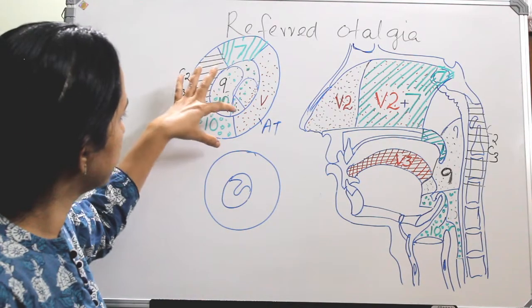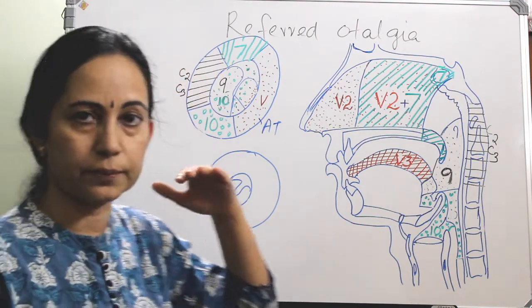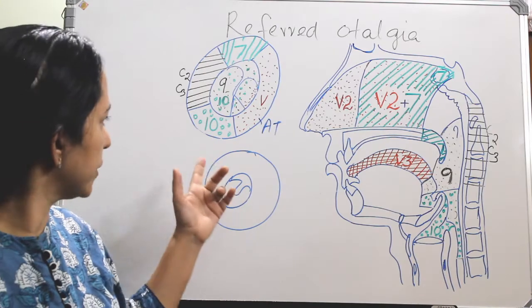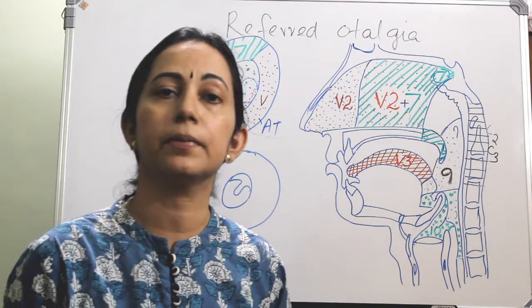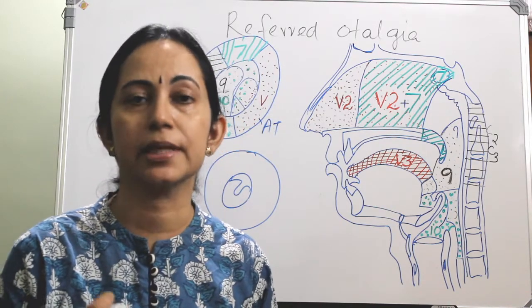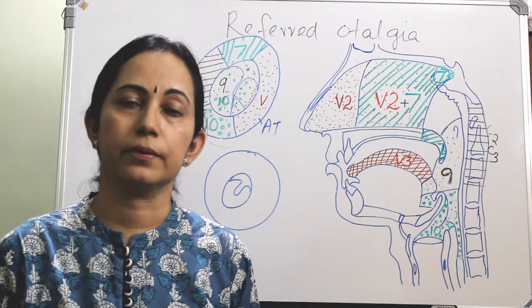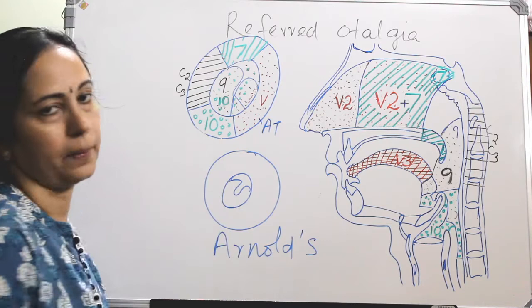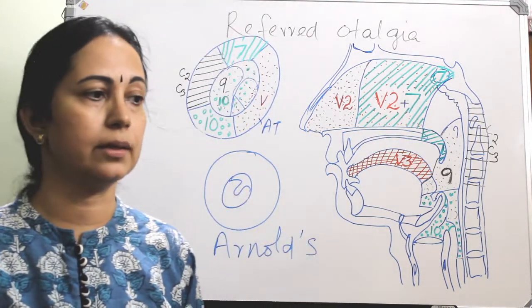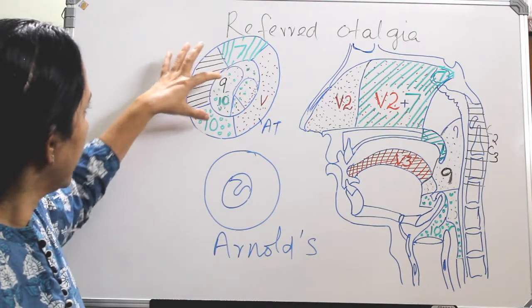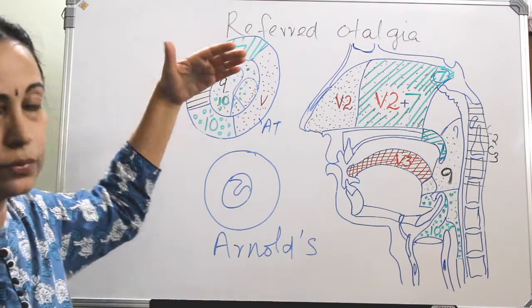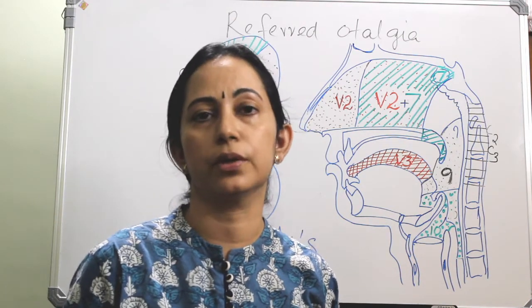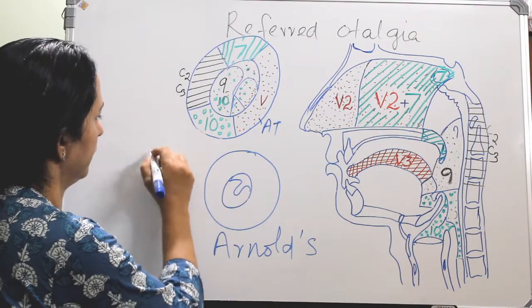The concha cartilage, the inner surface of the tympanic membrane, and the inner ear are supplied by the tenth nerve through Arnold's nerve — that is, the auricular branch of the vagus. The inner ear and inner surface of the tympanic membrane are also supplied by Jacobson's nerve, which is the tympanic branch of the glossopharyngeal nerve. The greater auricular and lesser occipital nerves through C2 and C3 supply the skin in front and behind the ear, and also the medial and lateral aspects of the pinna and the ear lobule.